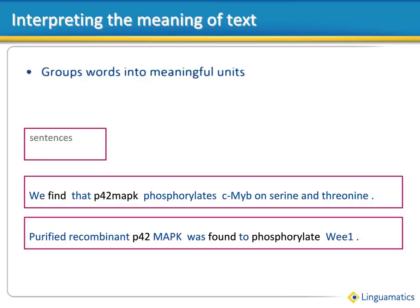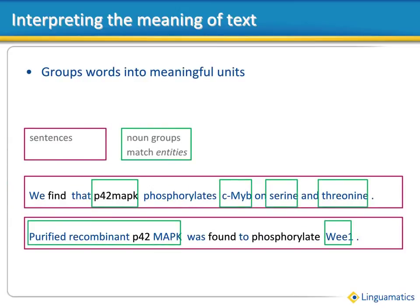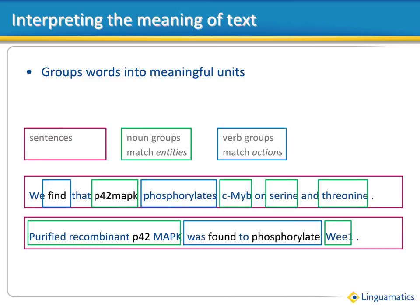Secondly, it identifies noun groups, entities or things. I2E recognises that P42 MAP K is a thing, but also recognises that purified recombinant P42 MAP K is a meaningful group of words describing one thing. Similarly, it recognises verb groups — actions which portray the relationship between the things. Phosphorylates is a verb group or relationship, but so is was found to phosphorylate.